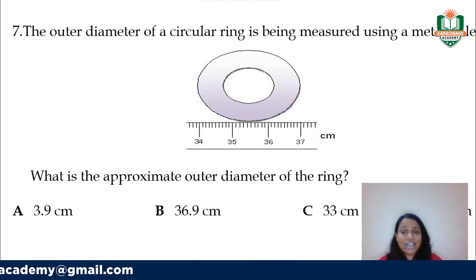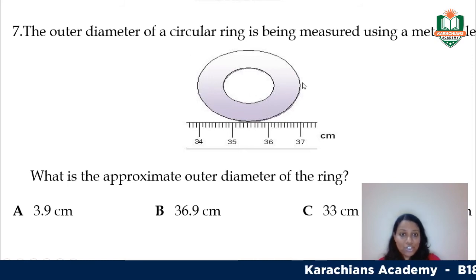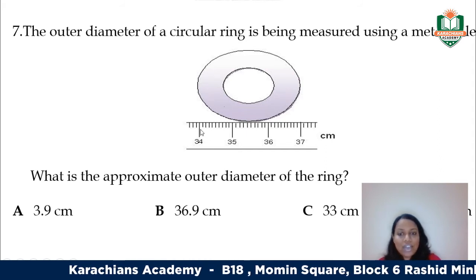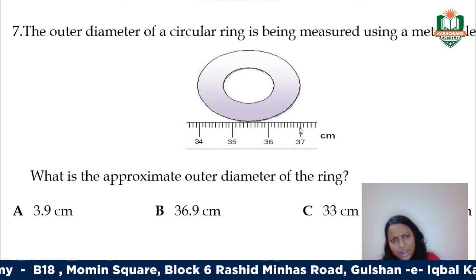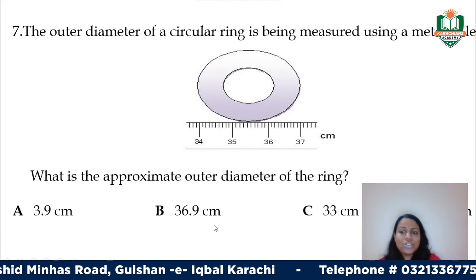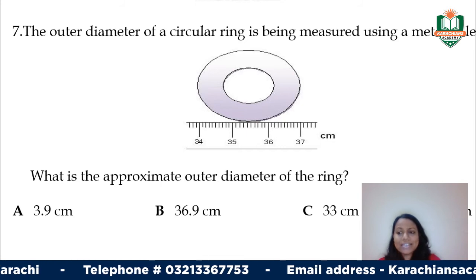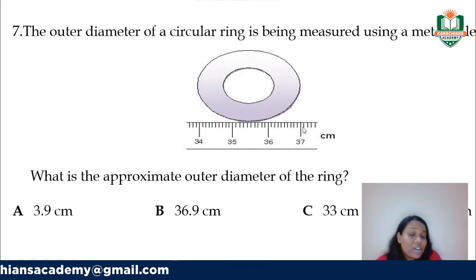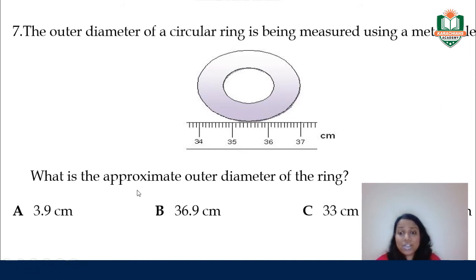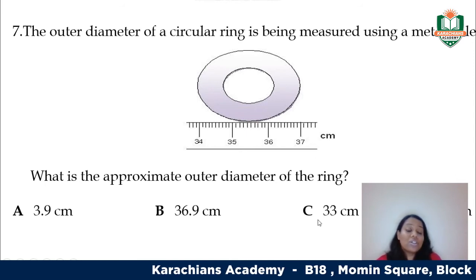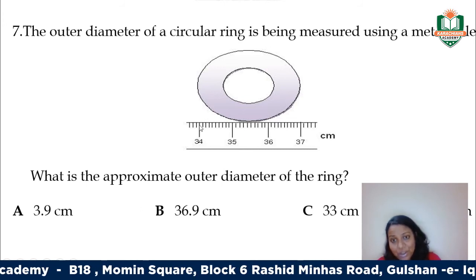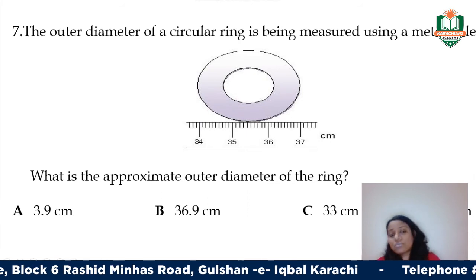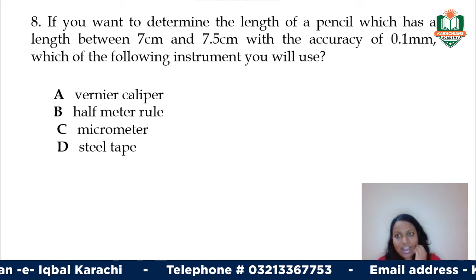This diagram shows a circular ring — find the approximate outer diameter. You have two diameters: outer is from one edge to the other, and inner is the inside span. For the outer diameter, one side reads approximately 34 and the other approximately 37, so 37 minus 34 gives 3 centimeters. There's no option for exactly 3, but 3.1 is there. If you place a ruler properly and draw a line, you get a more accurate reading — either 33.9 giving 3.1, or a slightly adjusted reading. So the answer is 3.1 centimeters.